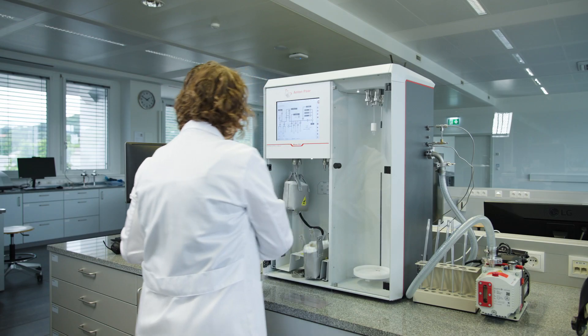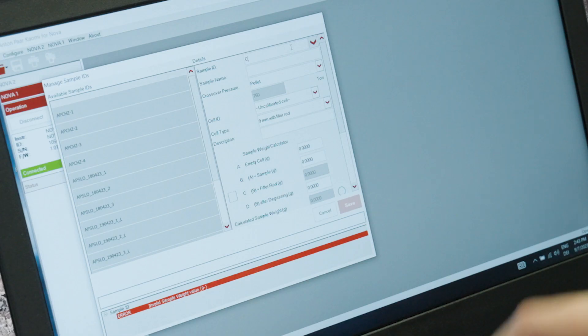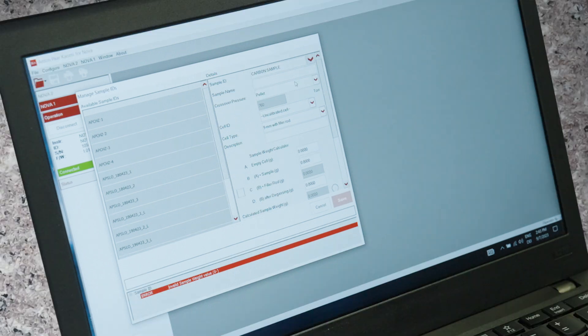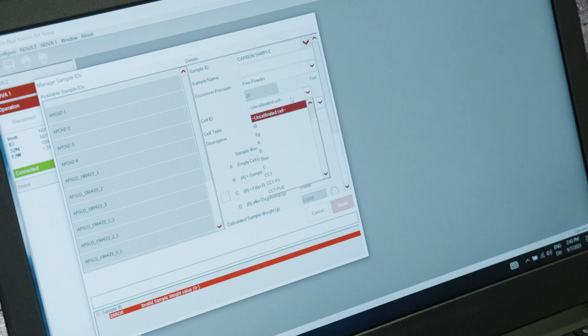A sample ID must be created in the software. Here the information entered would be the sample type, whether or not to activate powder protect mode, which slows down vacuum evacuation and prevents elutriation, the cell ID, where you select whether you are using a calibrated cell or an uncalibrated one.